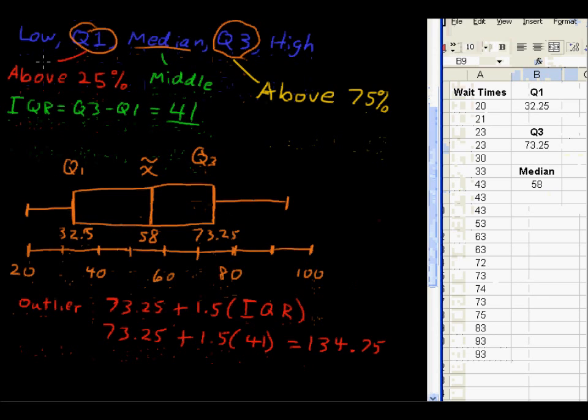Likewise, if we went to the left of Q1, if we had a value that was less than 32.25, I just noticed I had a little mistake there. I apologize, that's 32.25 in there, minus 1.5 times the interquartile range, 41, so less than this value of negative 29.25, then we'd have an outlier on the left-hand side. But we don't have any of those values in this data set. So, we just have the box and the whiskers and no outliers.